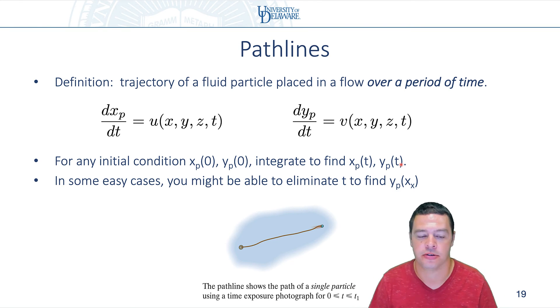And so that's one way to visualize a flow. In some easy cases, although it's not always possible, you can actually eliminate T. So if you solve for X_P(t) and Y_P(t), you might actually be able to algebraically eliminate the T, in which case you'll find some relationship between X and Y that defines a line.